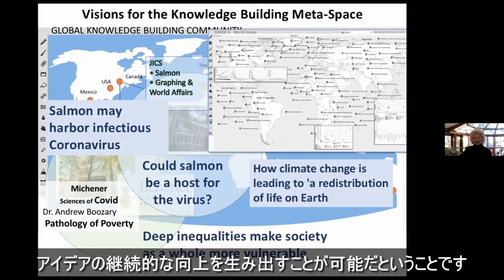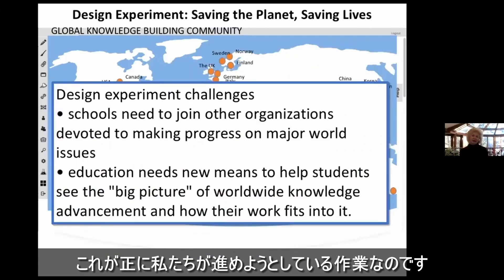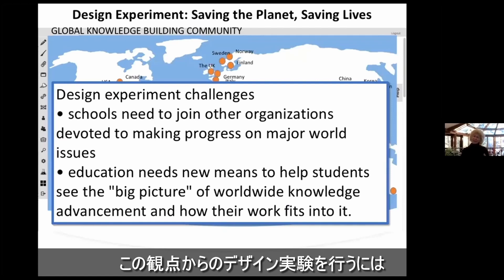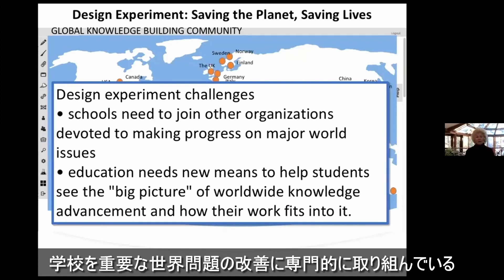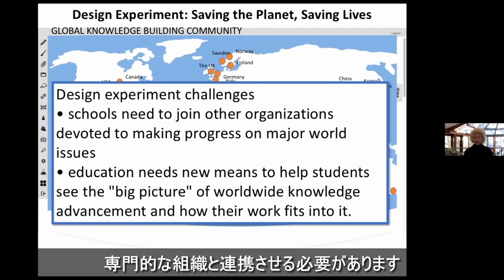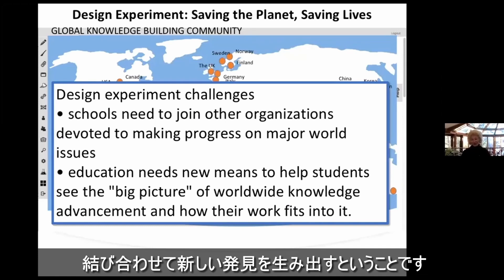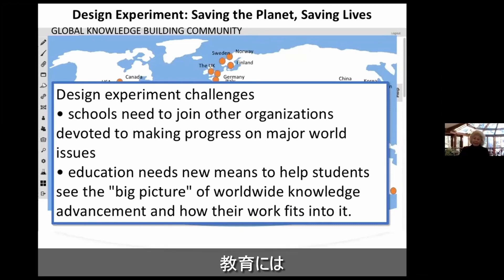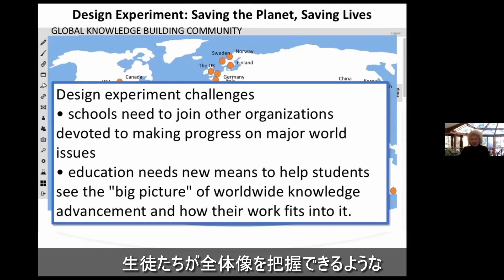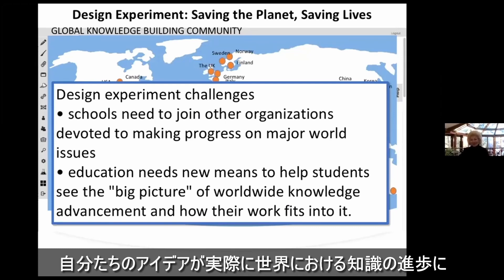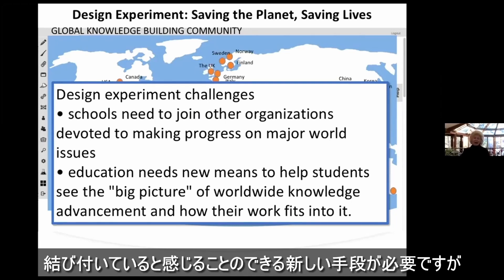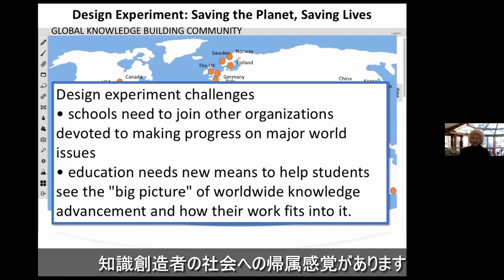The point I'm trying to make is that by putting ideas at the intersect on these trajectories, it's possible to create a continual improvement of ideas, which is exactly the kind of work we're trying to advance. Design experiment challenges require that schools be joined to other organizations devoted to making progress on major world issues. Their ideas are joining them in creating new kinds of discoveries. Education needs new means to help students see the big picture — that their ideas connect to worldwide knowledge advancement, so they have a sense of belonging to this larger society of knowledge creators.